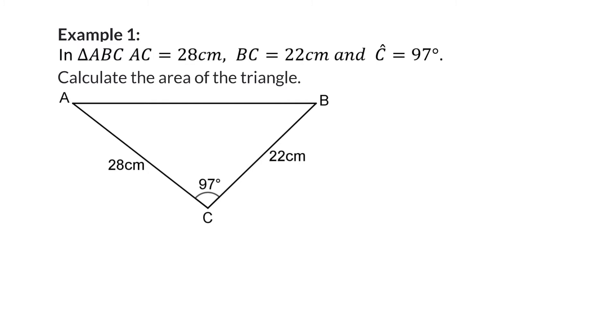For this triangle we do not have any perpendicular height, so we'll have to use the area rule. Here we are given two sides and the included angle, which is exactly what's needed to use the area rule. So our area rule will be a half multiplied by the two sides, which will be a and b, multiplied with sin of the included angle C. Now we can substitute. So we will have a half multiplied by 22 multiplied with 28 and then sin of 97. This means that the area of this triangle is 305.7 cm squared.